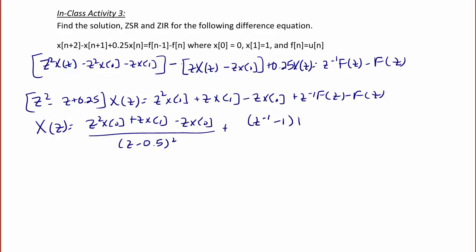The zero input response equals [z²x(0) + zx(1) - zx(0)] / (z - 0.5)². Notice that x(0) = 0 and x(1) = 1, so this reduces to z / (z - 0.5)². The zero state response X_ZSR(z)